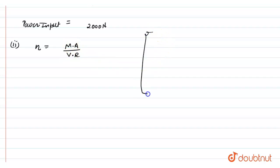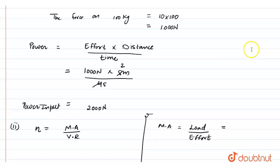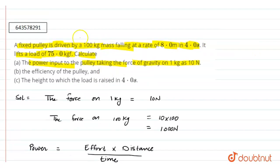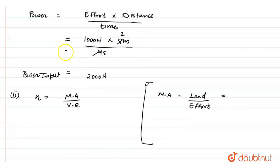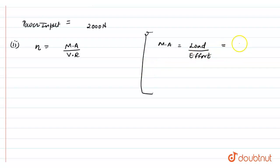As we know, mechanical advantage is the ratio of load to the effort. The load given in the question is 75 kgf and the effort applied here is 1000 newton. First of all we have to convert kgf into newton.